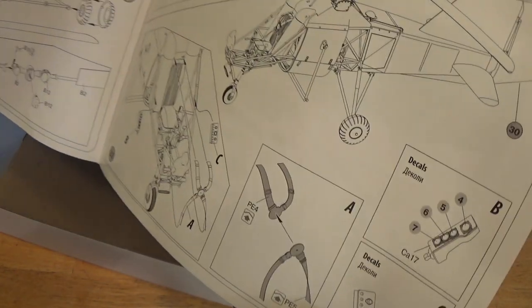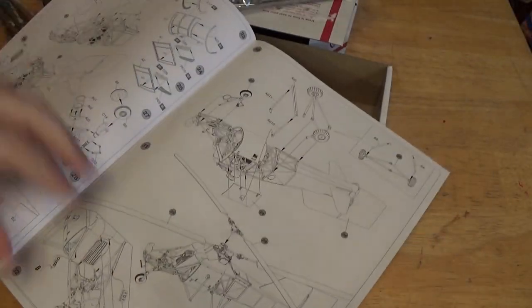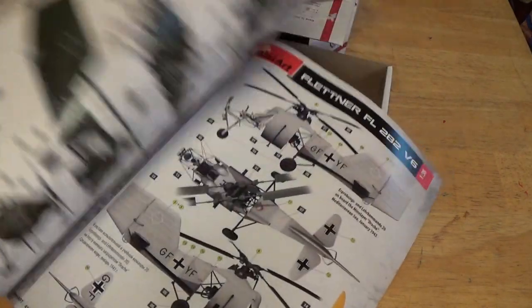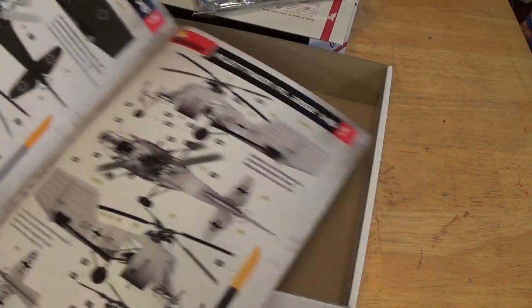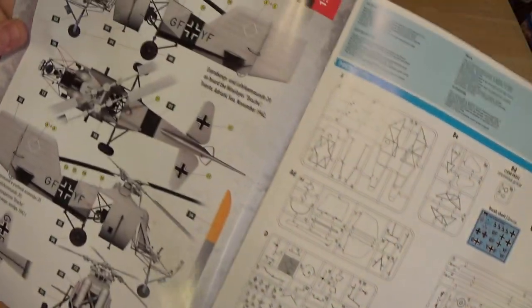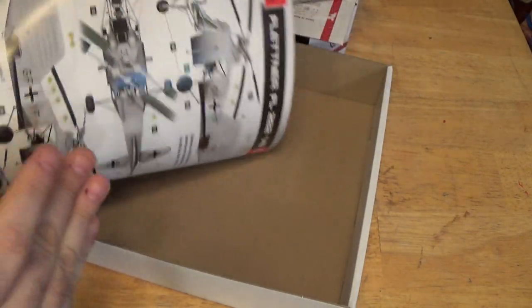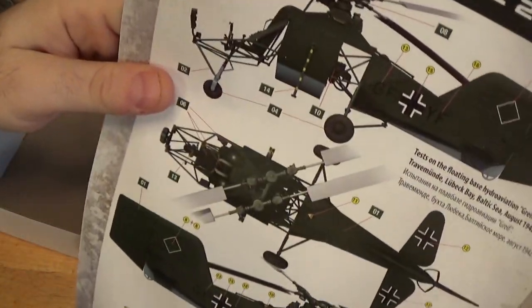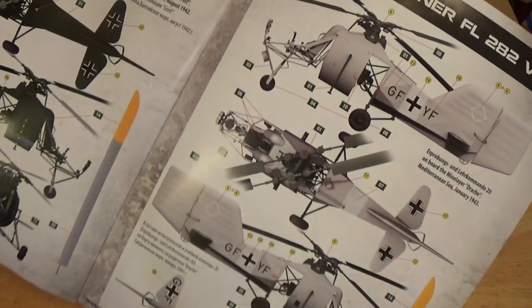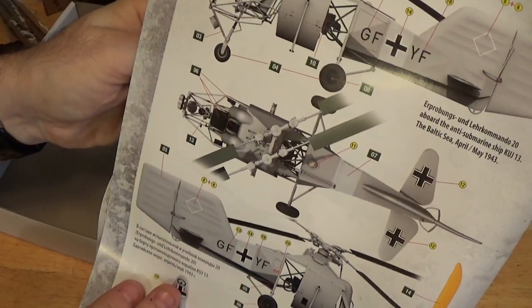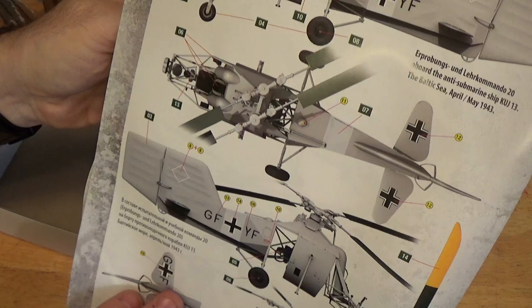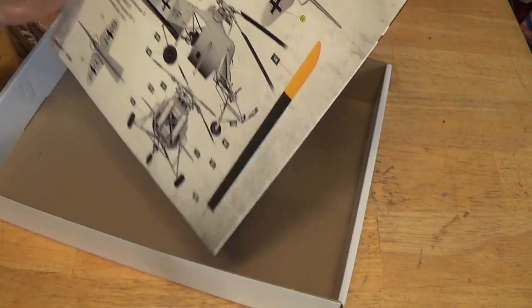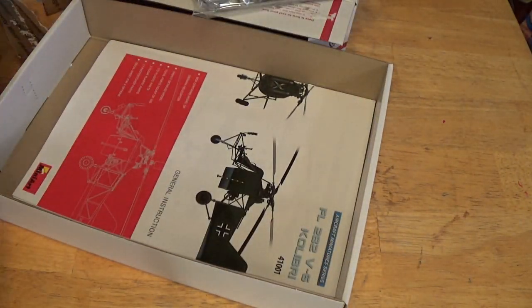Decals for instruments in the cockpit, that's cool, and it comes with photo-etch. So that's nice. And then, so overall it gives you three different color schemes. Gives you this one up front. Four different color schemes, cool. Gives you this one, this one, and that one. So really interesting subject. I've never seen a model on this subject before. Let's take a look at the pieces.